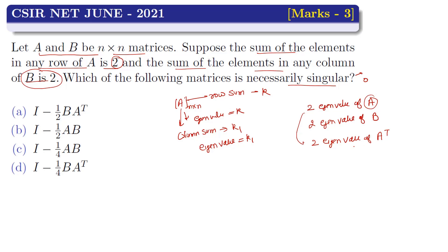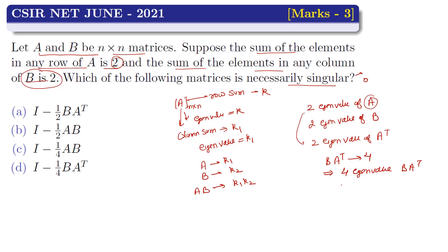Since the column sum of B equals 2, and transposing converts column sums to row sums, 2 is an eigenvalue of Bᵀ. Using the product result: if every row sum of A equals K₁ and every row sum of Bᵀ equals K₂, then every row sum of BAᵀ equals K₁·K₂ = 2×2 = 4, making 4 an eigenvalue of BAᵀ. Therefore (1/4)·4 = 1 is an eigenvalue of (1/4)BAᵀ. Since identity also has eigenvalue 1, subtracting gives eigenvalue 1 - 1 = 0 for I - (1/4)BAᵀ. A matrix with eigenvalue 0 has determinant 0 and is singular. So option D is correct, and options A, B, C are wrong.